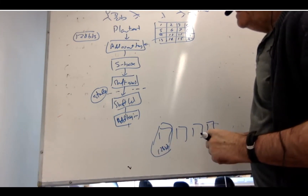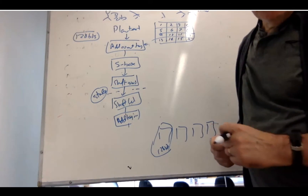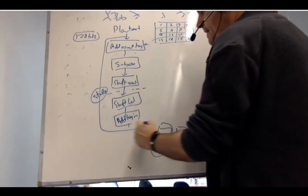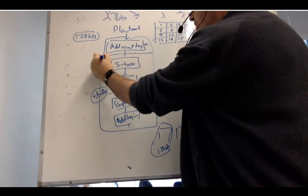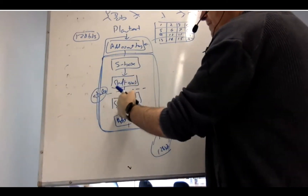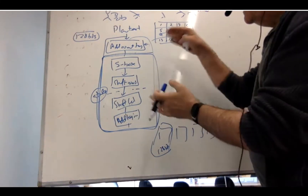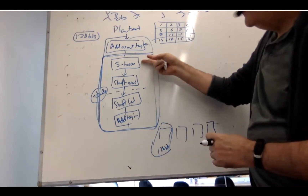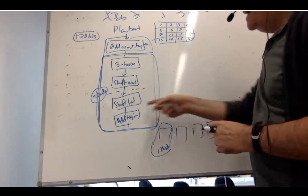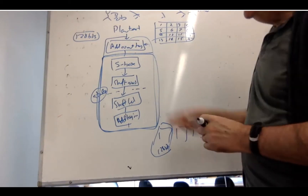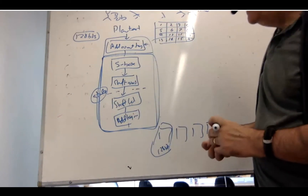The different key sizes will have a different number of rounds. The first round is the ADD round key, and that is similar to the next round. The next round does the S box, the shift rows, shift columns, and then the add key round. That's then repeated until we get to the last round, which has a substitution box, the shift rows, and the add round key at the end. With 128 bits we have 10 rounds, with 192 bits we have 12 rounds, and with 256 bits we have 14 rounds.